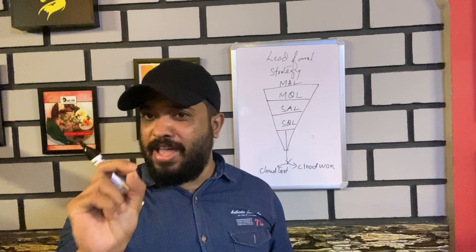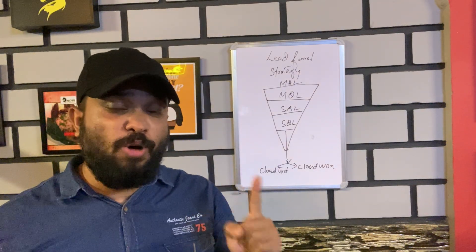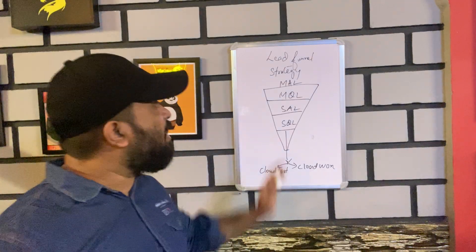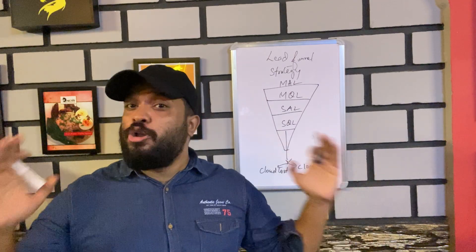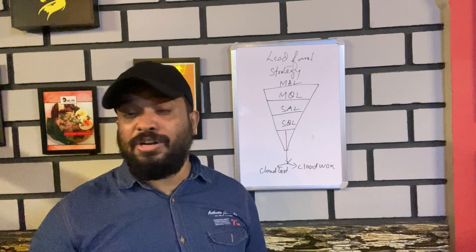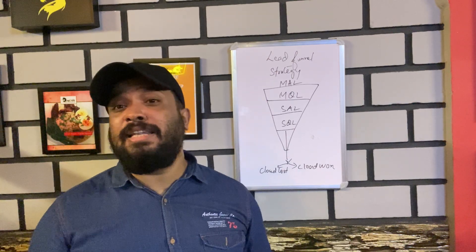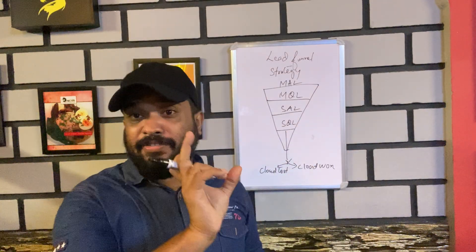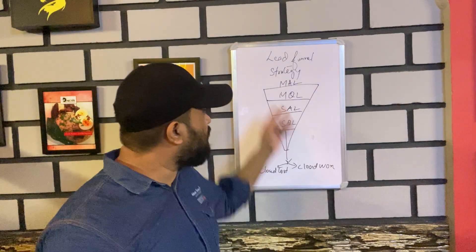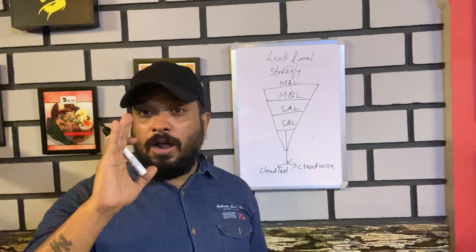Whenever you are generating a lead — whenever we get the first point of contact — that is known as MAL, which stands for Marketing Available Leads. Marketing Available Leads come in bulk quantities and they are not ready to buy your product. They just saw your ad on Facebook, Google Ads, a retargeting campaign, or visited your landing page and filled in their information like name, email, and phone number. If you try to pitch and sell directly to Marketing Available Leads, it's going to be a total disaster.